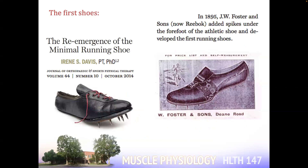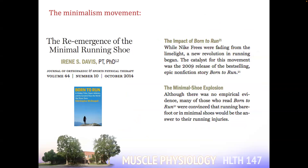Athletic shoes have been around since the late 19th century. The shoe on the left is a 1900 Foster Deluxe Spike, and there's an 1895 advertisement for it. In 2009, the book Born to Run came out and it's cited pretty ubiquitously as having a massive influence on the barefoot and minimalist running movement.